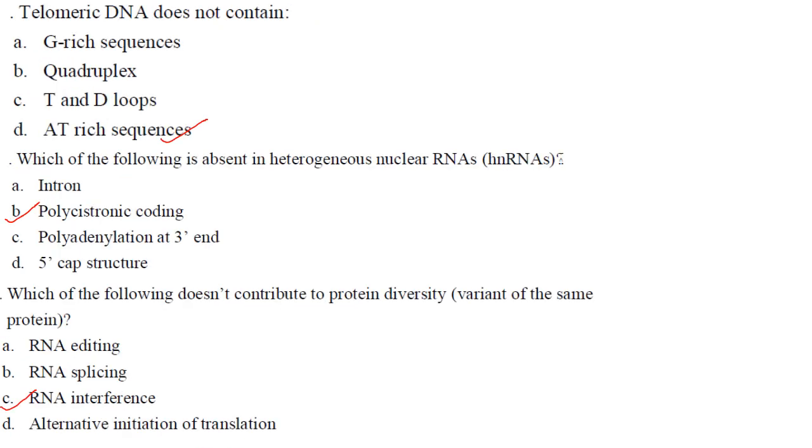Telomeric DNA does not contain G-rich sequences? Yes. Quadruplex? Yes. T and D loops? Yes. AT-rich sequences? It is not AT, it is G-rich sequences. Answer is option D. Which of the following is absent in heterogeneous nuclear RNAs? Polycystronic coding is absent in hnRNAs. It is found in bacteria, not in eukaryotes.